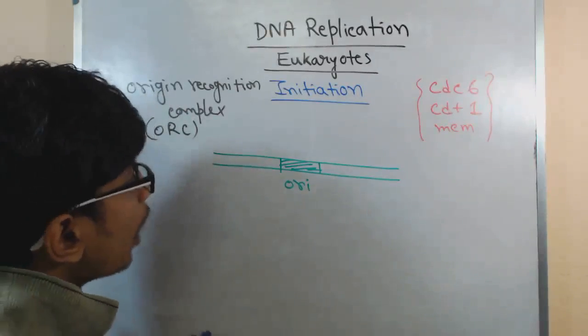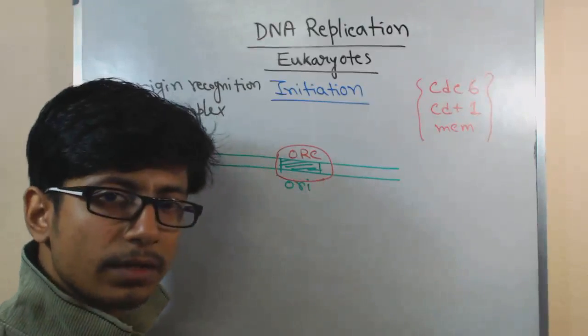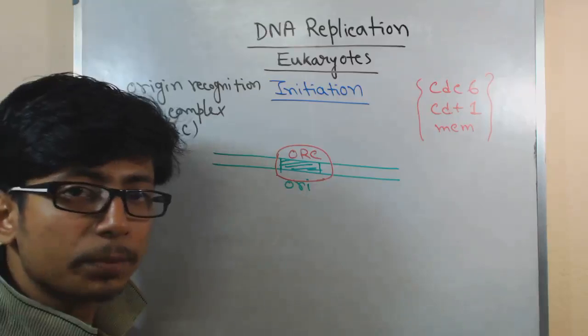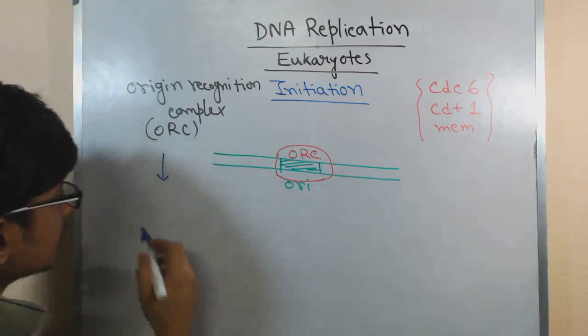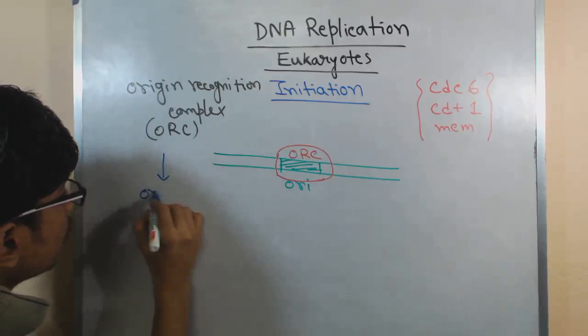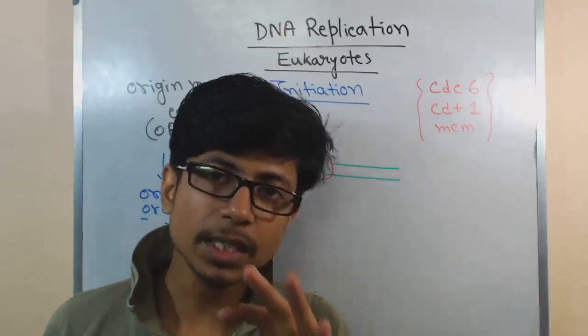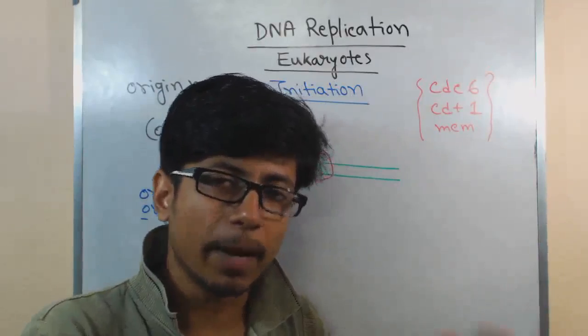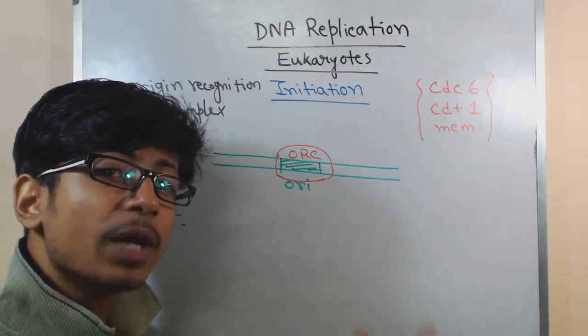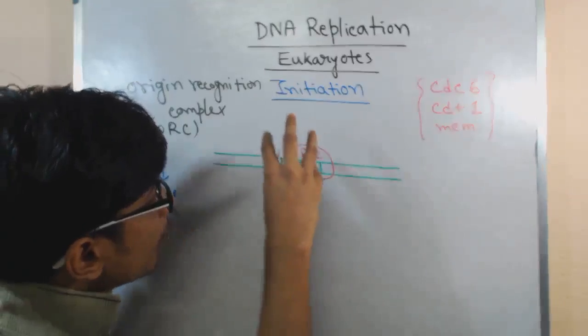At the very beginning, this ORC recognizes the origin and binds with it. Remember, origin recognition complex is also a complex of proteins, not a single protein. This complex is made up with multiple ORC proteins. For example, in Saccharomyces cerevisiae there are six different ORC proteins called ORC1, ORC2, and so on. Some of them with the help of DNA binding domain bind with the ORI section of DNA, and some of them are bound with ATP and can hydrolyze ATP. ATP hydrolysis is required in some cases to drive energy.